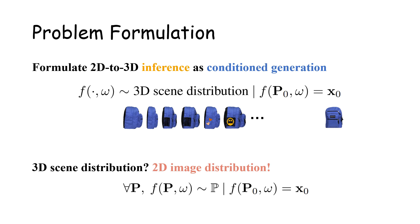Directly learning the 3D scene distribution prior requires large 3D datasets, which are less straightforward to acquire and restrict application to unseen scene categories. To enable better generalizability to in-the-wild scenarios, we instead leverage 2D image priors.